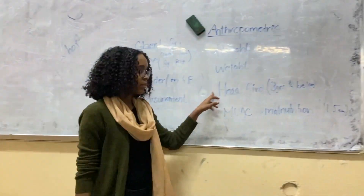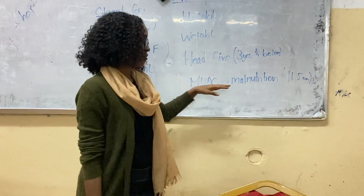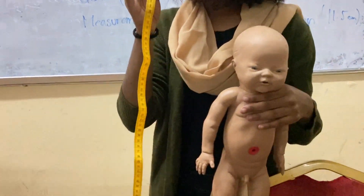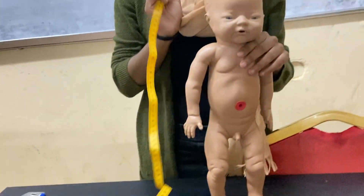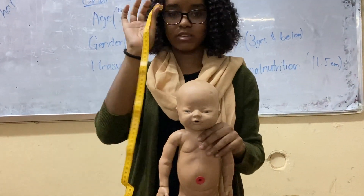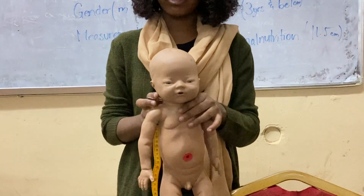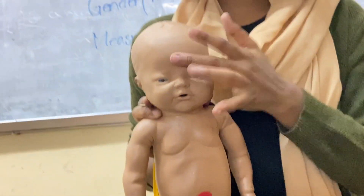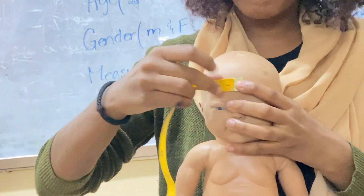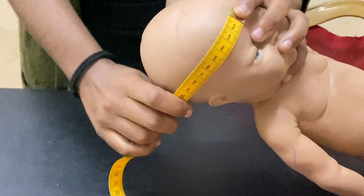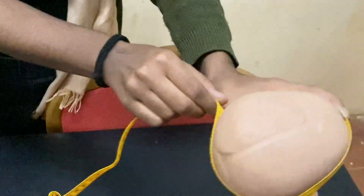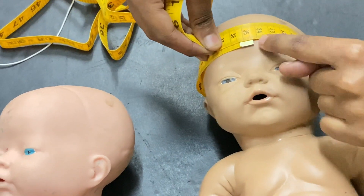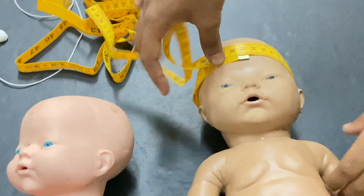Next, the head circumference and the mid-upper arm circumference, which we're going to measure for malnutrition risk. For the head circumference, we have the baby and the measuring tape. Make sure the tape is on the centimeter side. You have to measure it on the most prominent areas of the head — on the occipital protuberance and on the most prominent part of the forehead. Start by putting it on the forehead, go all the way past the occipital protuberance, come back, and measure it. You measure whichever part hits the metal — approximately 34.3 centimeters. Then you plot it on the chart.